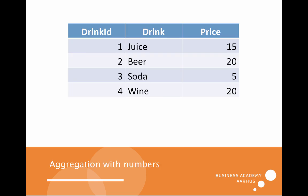In this example I will use a small table with a drink ID, a drink description, and a price. I have four drinks on my menu card: juice, beer, soda, and wine — and they have different prices.